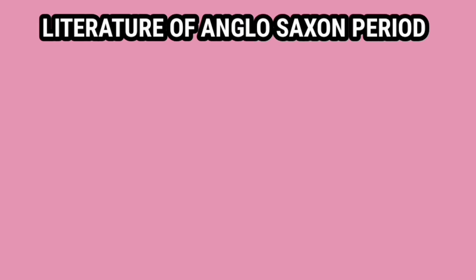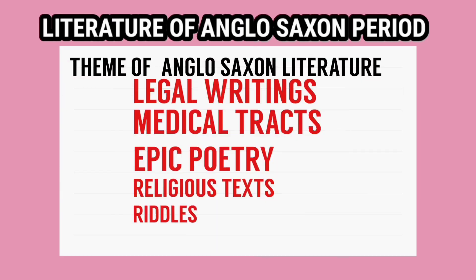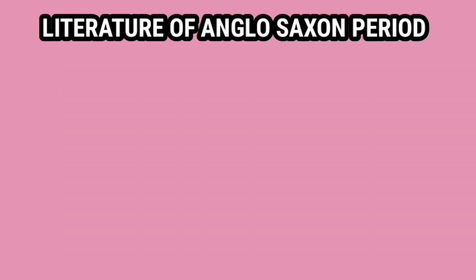Anglo-Saxon literature میں language، literary devices اور themes کو دیکھیں تو یہ legal writing، medieval traits اور epic poetry پر مشتمل تھا۔ Religious texts بھی لکھے جاتے تھے۔ Prose کے طور پر Alfred the Great کی translation بھی ملتی ہے جنہوں نے Latin texts کو English میں translate کیا۔